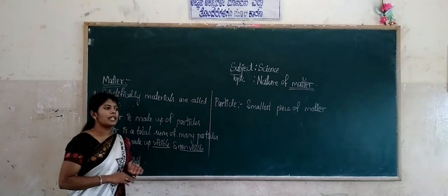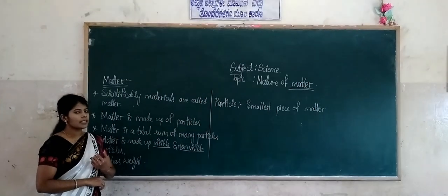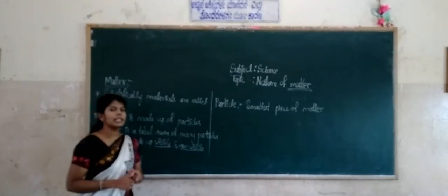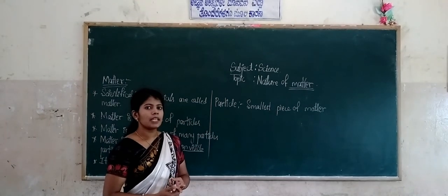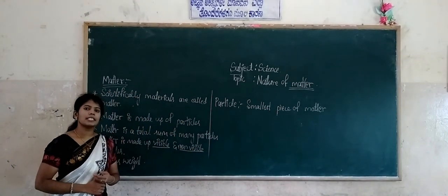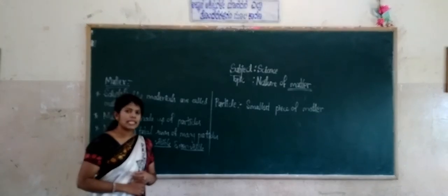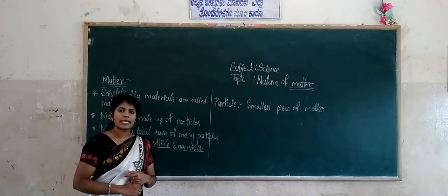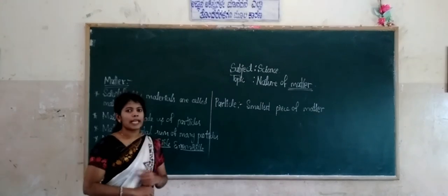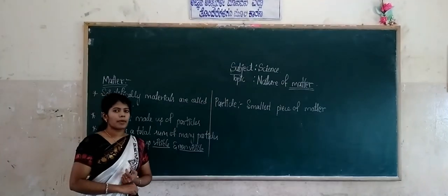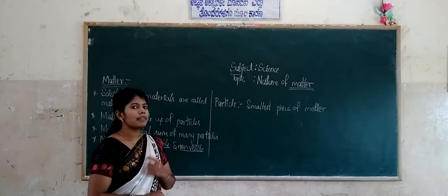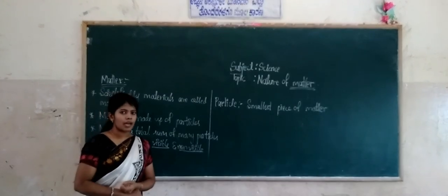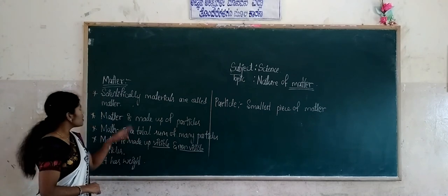We can classify objects by their material. For example, if I ask you to tell me the objects made by wood, you can easily say: chair, bench, table, windows, door. These are made by wood. If I ask you to collect plastic materials, you collect objects which are made by plastic. Whatever objects we see in our surrounding, we can classify them — these things we call matter.